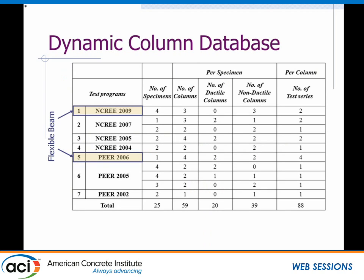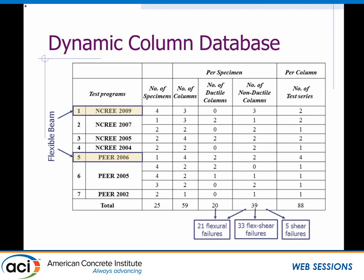We had seven test sets in total. These tests involved frames of different sizes, different numbers of columns, both ductile and non-ductile columns in terms of transverse reinforcement spacing. We ended up with 21 flexural failures, 33 flexure-shear failures where there's some degree of flexural yielding prior to shear failure, and only five shear failures. There were two sets with flexible beams, and we'll focus more on the data not influenced by the flexible beam to compare with just the column modeling parameters.